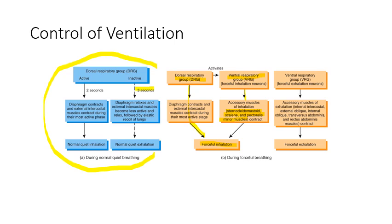If we want to exhale forcefully, again we need the ventral respiratory group to help. We relax the diaphragm and external intercostals, but now we also flex some muscles to help force that air out. Those are the internal intercostals — which have the opposite action of the external intercostals, they're antagonists — and we're also flexing the external obliques, internal obliques, transverse abdominis, and rectus abdominis. So all four of your abdominal muscles help contract to force air out of your chest.